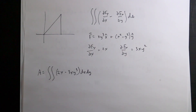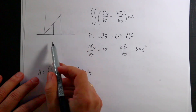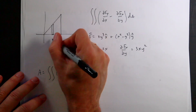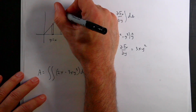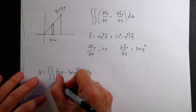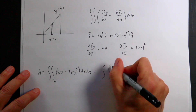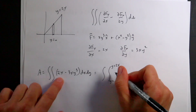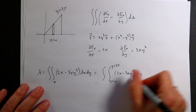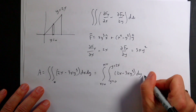I need to set up the limits. I'll integrate along y first, then add those up in x. The bottom of each vertical strip is y = 0 and the top is y = 2x (the slanted boundary), so I integrate from y = 0 to y = 2x. Then I add all of those strips from x = 0 to x = 1. The double integral is: from x = 0 to 1, from y = 0 to 2x, of (2x − 3xy²) dy dx.